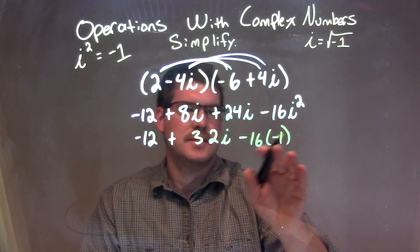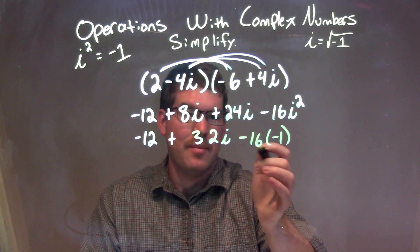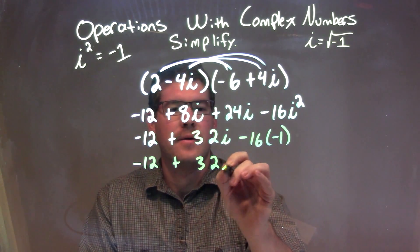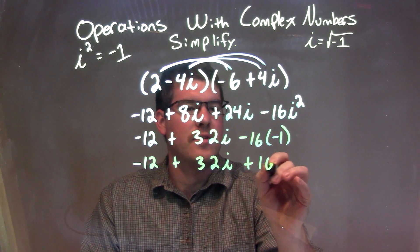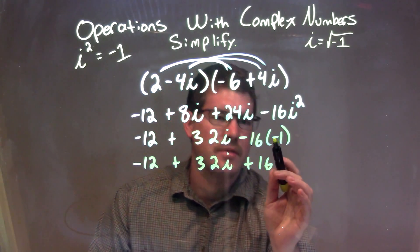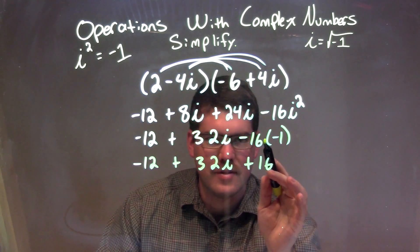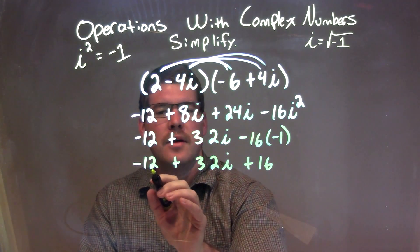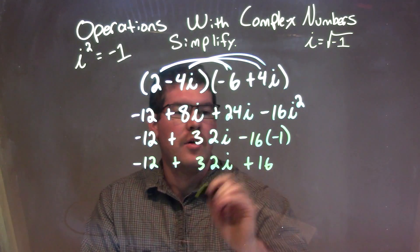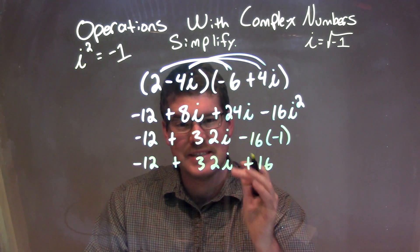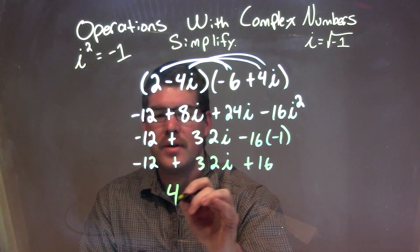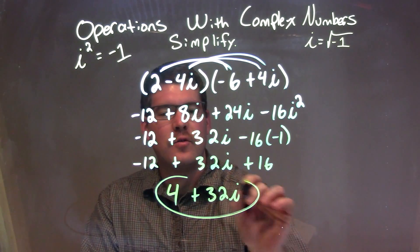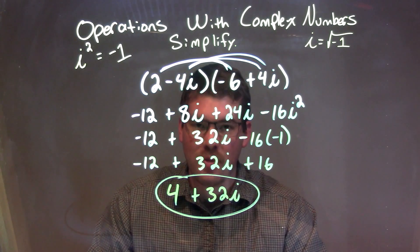Negative 16 times negative 1 is positive 16, so we have negative 12 here, plus 32i, plus 16. Now we can combine our real numbers, the negative 12 and the 16. We combine them together to get a positive 4. We bring down 32i, and we have our final answer: 4 plus 32i.